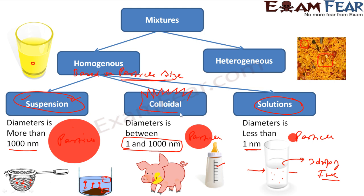Colloids show the Tyndall effect. If you want to separate them, you won't be able to use a normal filter paper because the particle size is small and they will come through. You need a semipermeable membrane, which is generally made from a pig's bladder — you can also make an artificial semipermeable membrane. These membranes are used to separate colloids. In this whole chapter we will talk about colloids.